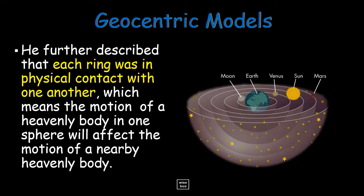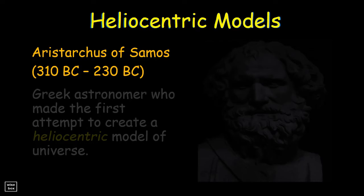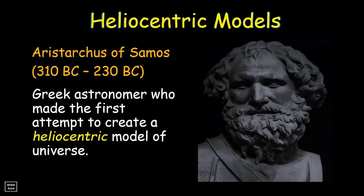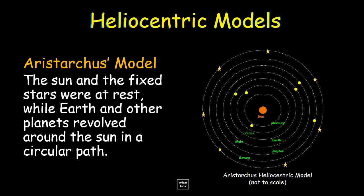It was Aristarchus of Samos, a Greek astronomer, who made the first attempt to create a heliocentric model of universe. Based on Aristarchus model, the Sun and the fixed stars were at rest, while Earth and other planets revolved around the Sun in a circular path.